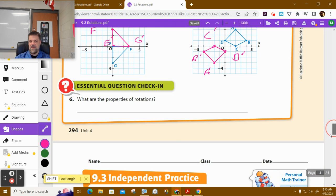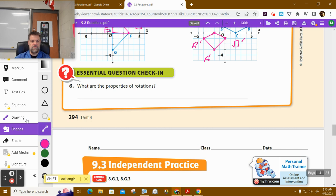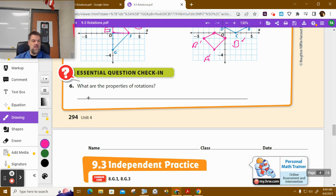All right. Almost done, guys. Last essential question. It says, what are the properties of rotation? Well, we said preserves. What does it preserve? Size and shape. But I'm going to be a little more formal and say, but changes orientation.